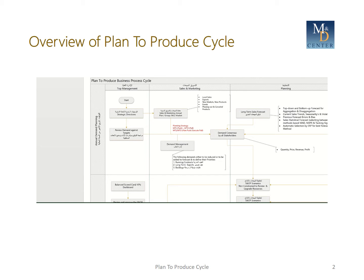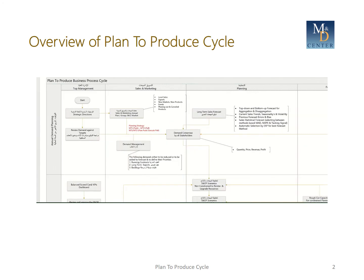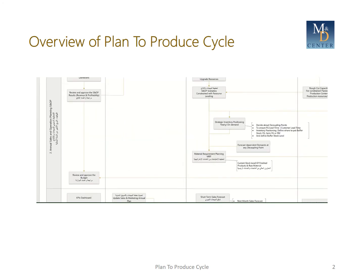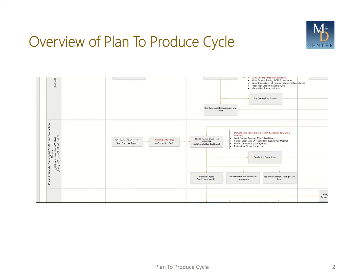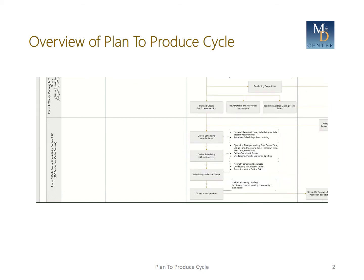Rows represent the main functions that constitute the plan-to-produce cycle. We have annual demand planning to be run in the last quarter of the current year, annual sales and operations planning run at the same time, monthly planning including sales and operations planning, master production schedule, and MRP to be run the last week of the current month, weekly planning for master production schedule, MRP, and production orders to be run the last day of the current week, and then daily production activity control.